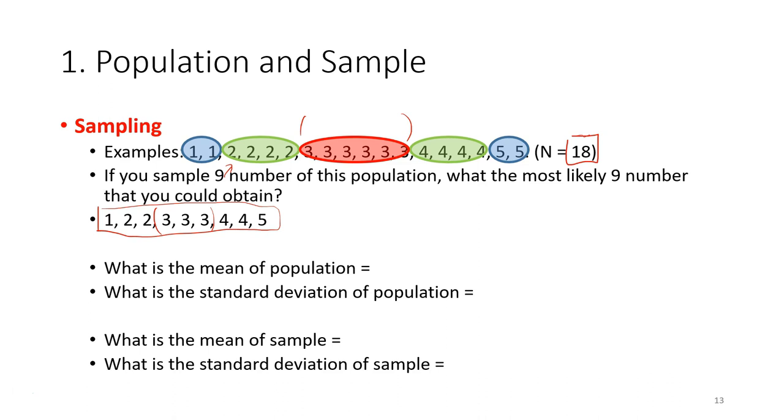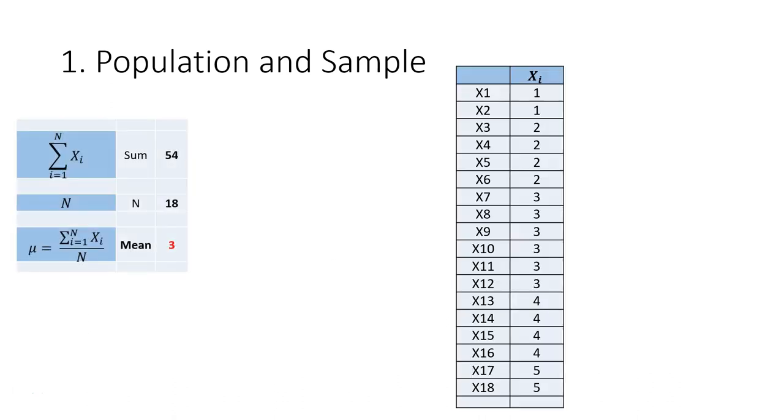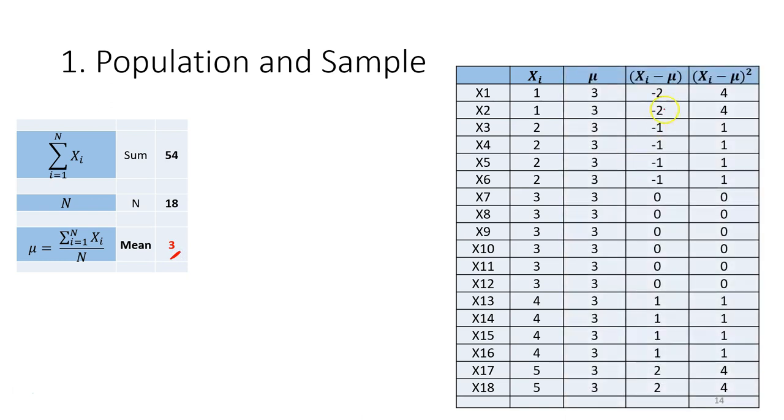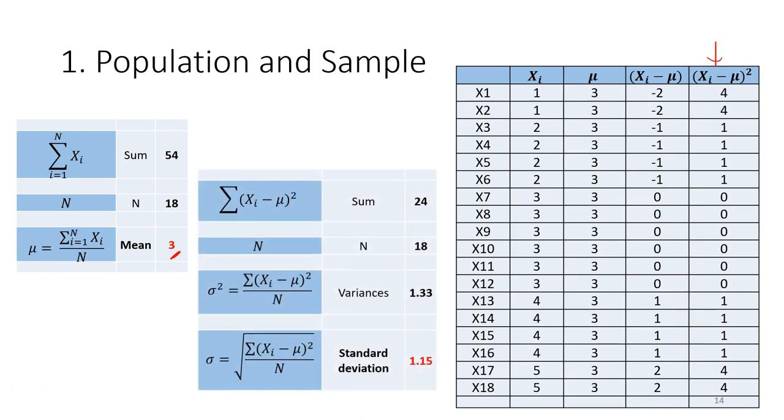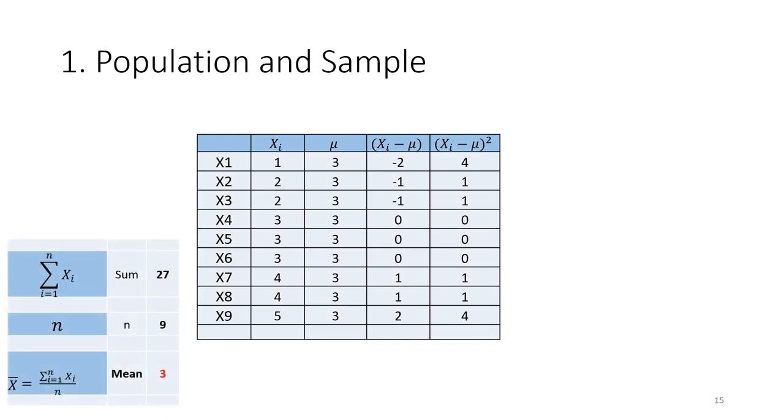So for the mean, we need to sum out all the values. So the mean for the population is 3. Then after that we calculate the sum of squares, then we divide with the number of observations, then we get the variance. Then we square root the variance, we get the standard deviation. So this is the standard deviation for the population, and this is the mean for the population.